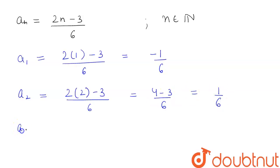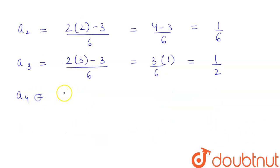Now if we put the value of n to be 3, our a3 will equal 2(3) - 3 divided by 6, which will equal, if we take 3 common, we get 3 upon 6 into 1, so this equals 1/2.